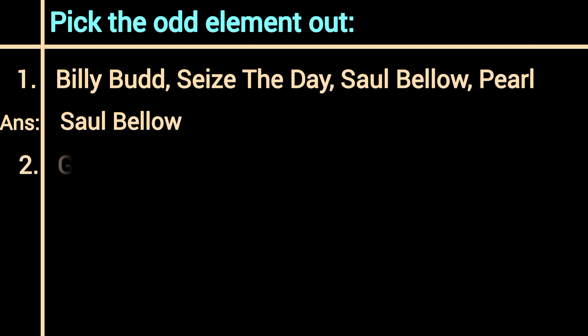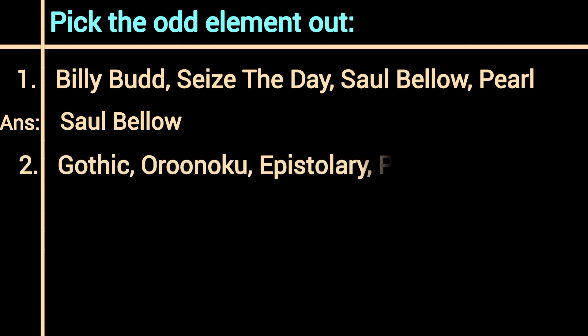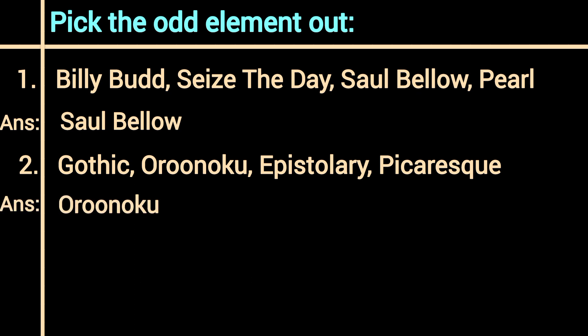Second: Gothic, Oroonoko, Epistolary, Picaresque. Here the odd element is Oroonoko, because the others are types of novels and Oroonoko is the name of a novel.